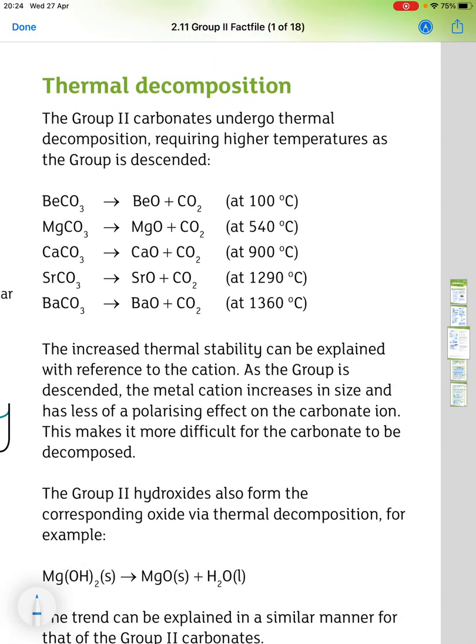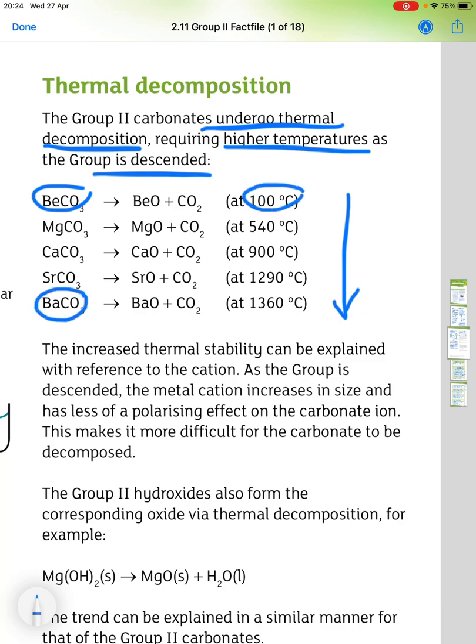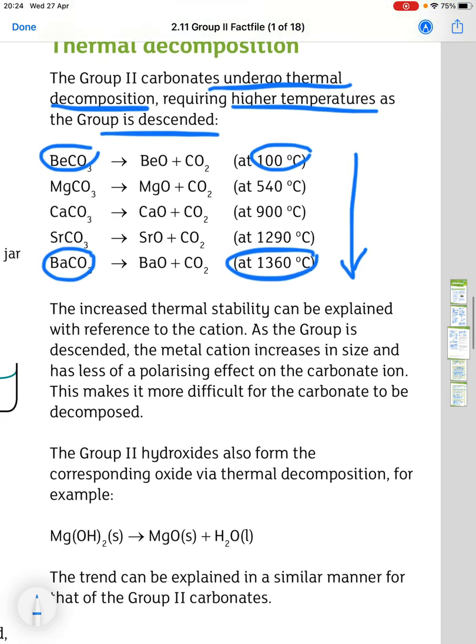Thermal decomposition is another reaction that you need to know about. So, all of the Group 2 carbonates undergo thermal decomposition, requiring higher temperatures as the group is descended. And you see that trend here. So, beryllium carbonate decomposes at 100 degrees, where barium carbonate doesn't decompose until 1360 degrees.